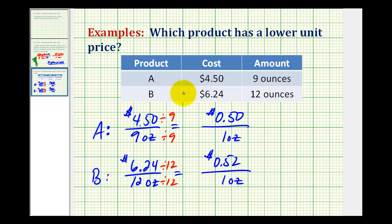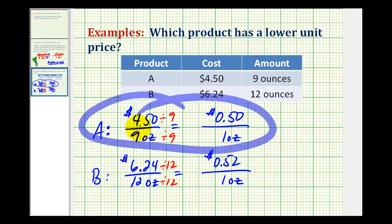So we can see that even though brand A has a smaller package, the unit rate still is less and therefore product A is the better buy.